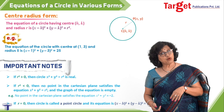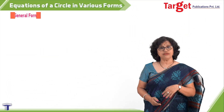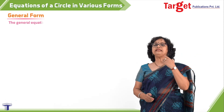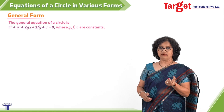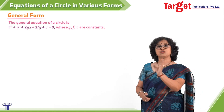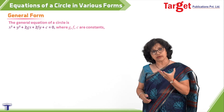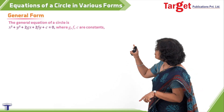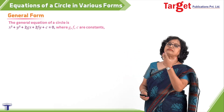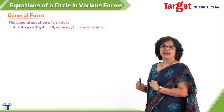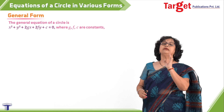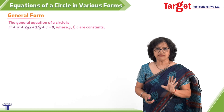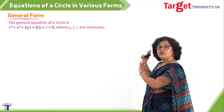Let us move to the general equation of a circle. From the previous cases we observed terms of x², y², x, and y. So we write the general form as x² + y² + 2gx + 2fy + c = 0, where there is a constant term and the equation equals zero. This is what we observe from the previous two forms, now combined into one general equation.